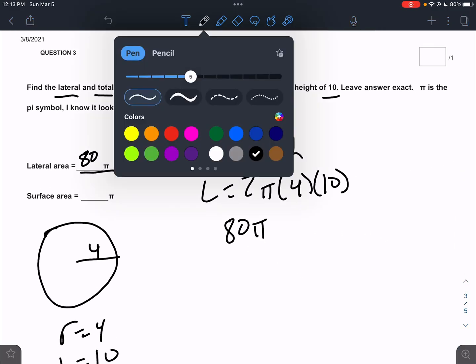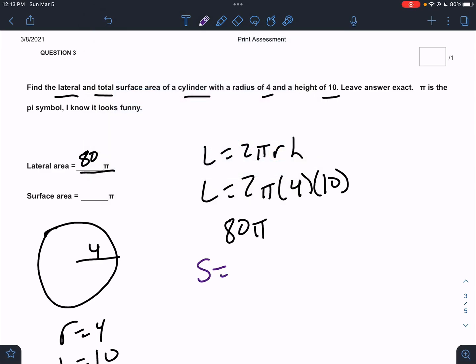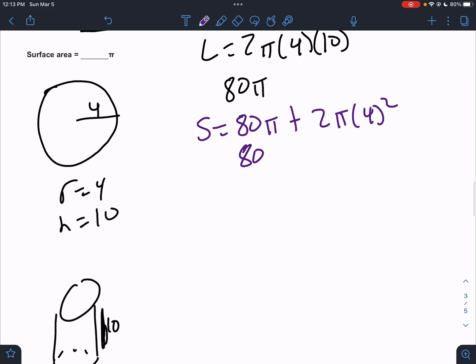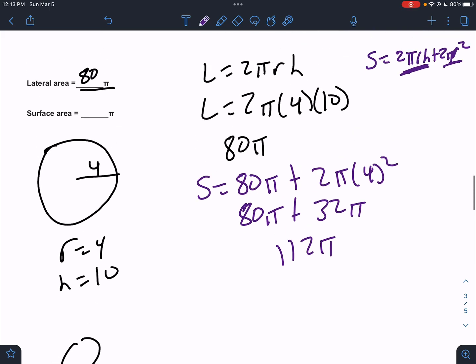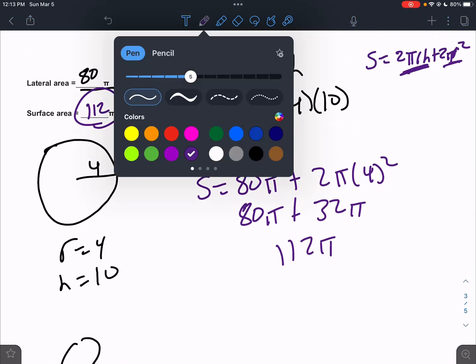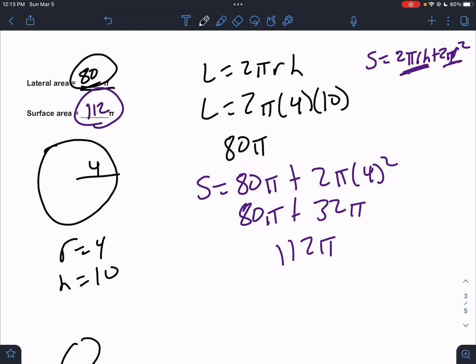The total surface area is going to be the lateral plus the two circles, which would be 2π times r squared. I should have wrote that down somewhere. And our total surface area is 2πrh plus 2πr squared. So we already did that part. That was 80π. Now we're going to add two bases. So this would be 80π plus 16 times 2 would be 32π. And that would clock in at 112π. And they already got the pi there. So there's the lateral and total of the cylinder.